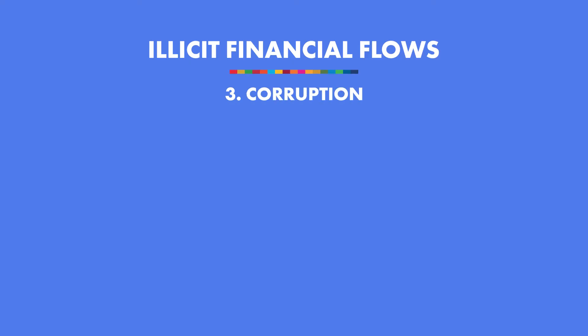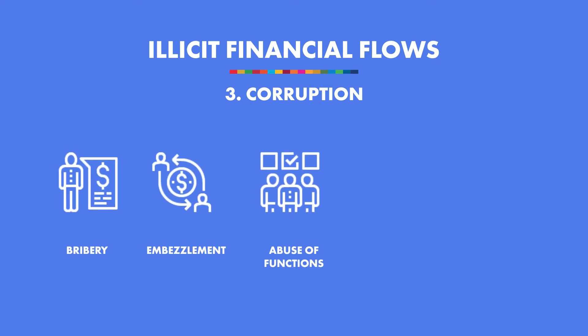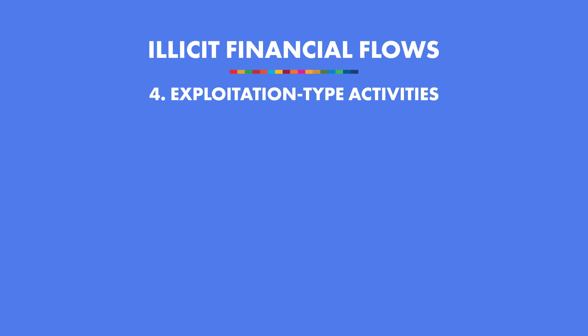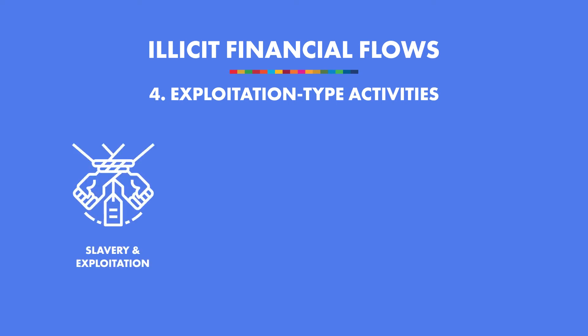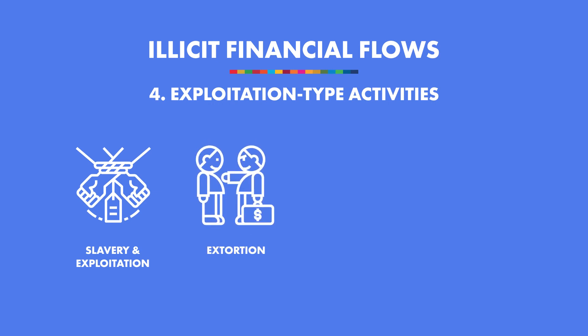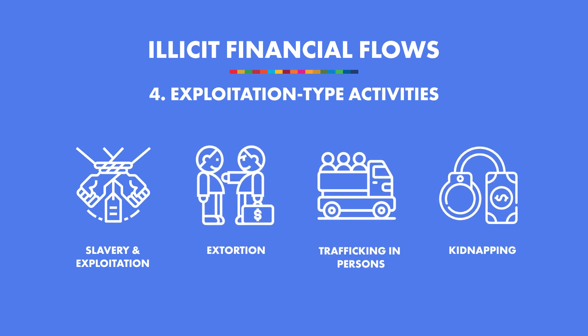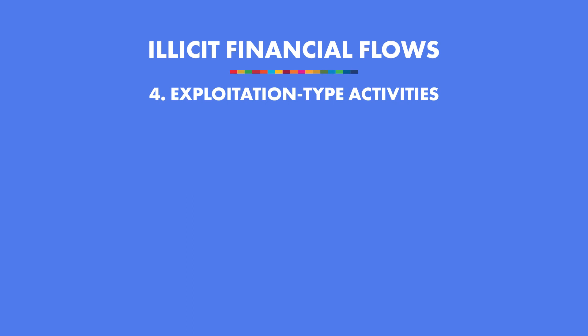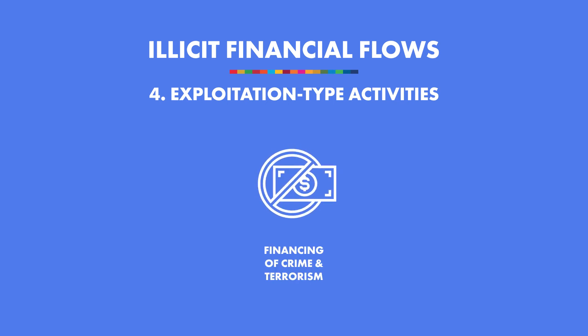IFFs from corruption is the third category, which includes a broad range of criminal acts like bribery, embezzlement, abuse of functions, trading in influence, and illicit enrichment. Illicit financial flows from corruption may be generated not only by cross-border corrupt practices, but also by proceeds from domestic corruption which are hidden abroad. The fourth category — IFFs from exploitation type activities — refers to illegal activities such as slavery, exploitation, extortion, trafficking in persons, and kidnapping, and also covers the financing of crime and terrorism.